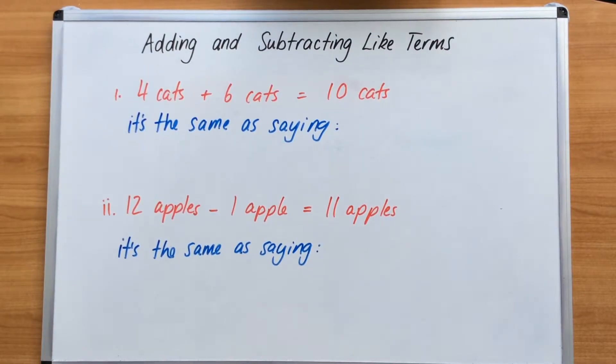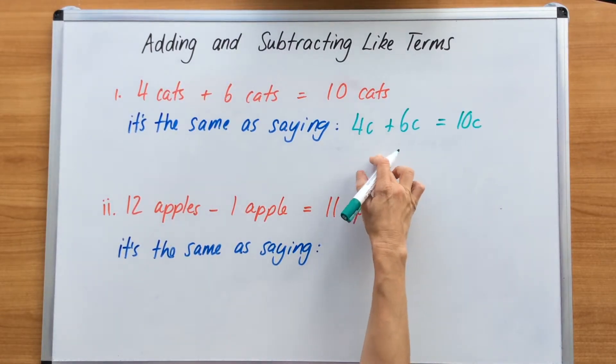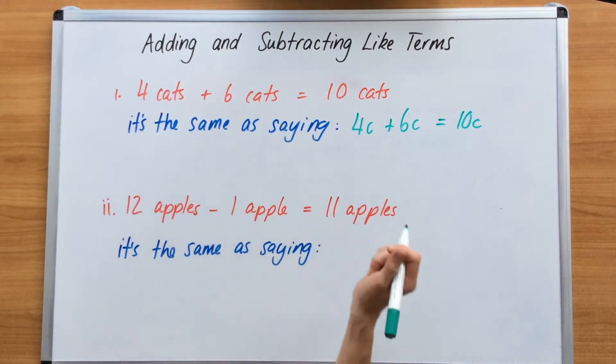So moving on to adding and subtracting. If we think about it in a scenario that's tangible that we can see, it might be helpful. So if we have 4 cats plus 6 cats, we actually have 10 cats. If we change this into a like term situation, it's the same as basically saying 4C representing 4 cats plus 6C representing the 6 cats equals 10C. That way it's easy to make it more tangible that you can see, you can understand it by replacing those pronumerals with an item like a cat.